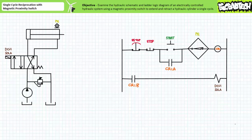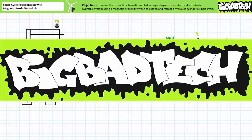In conclusion we examined both the hydraulic schematic and ladder logic diagram of an electrically controlled hydraulic system executing a single cycle reciprocation sequence making use of a magnetic proximity switch. Additionally we examined the advantages and limitations of magnetic proximity switches. Finally we examined some hypothetical troubleshooting scenarios and discussed possible sources of and solutions to these problems. Remember to review this material as often as you need to really drive it home. Imagine how well lab will go if you know what you're doing. Thank you very much for your attention and interest. I'll see you again during the next lecture of our series. Remember to tell your lab partner about this resource and check out the Big Bad Tech channel for additional resources and updates.